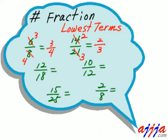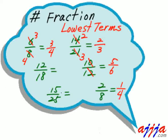Let's try an easier one: ten over twelve. Divide by two, divide by two — so five over six. Very easy. And this one — divide by two, divide by two — it's going to be one over four.